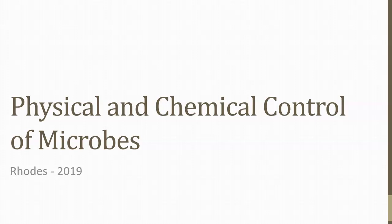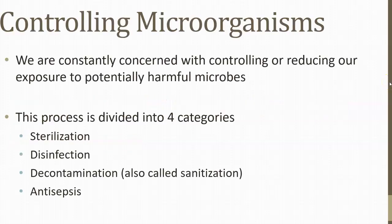Chapter 9 is about controlling microbes outside of the body, and chapter 10 is about controlling microbes inside of the body. We're concerned with controlling or reducing our exposure to potentially harmful microbes or potential pathogens. We can sterilize things, disinfect surfaces, use antisepsis when cleaning skin and living tissue, and there's also decontamination or sanitization. There is also a process called de-germing.